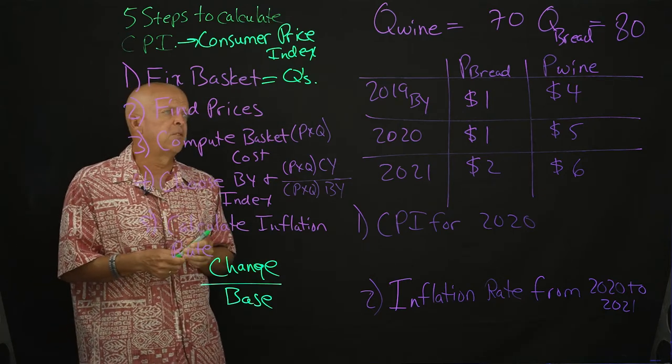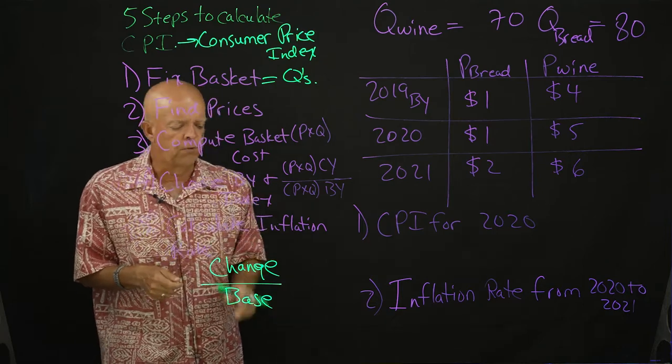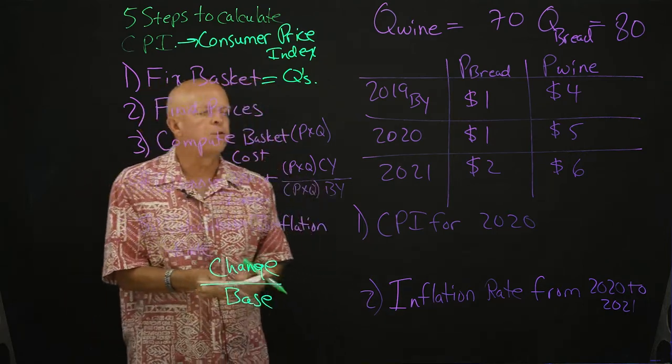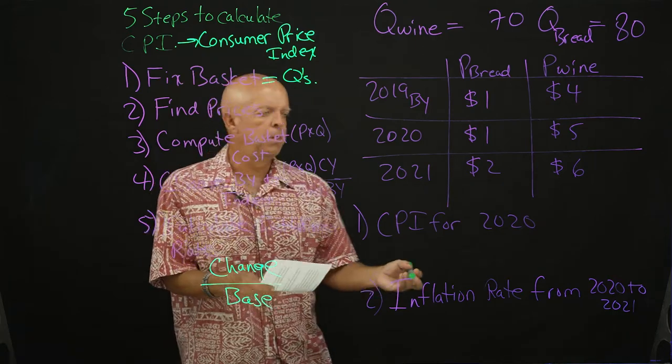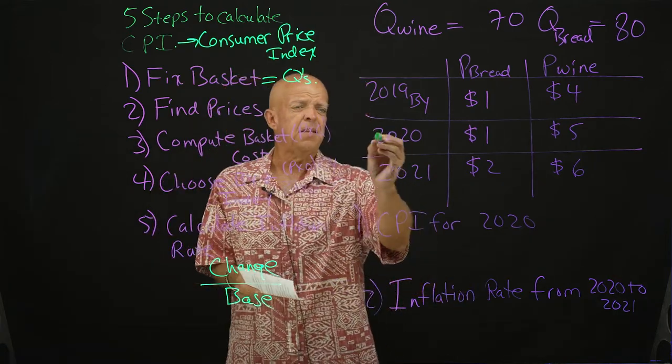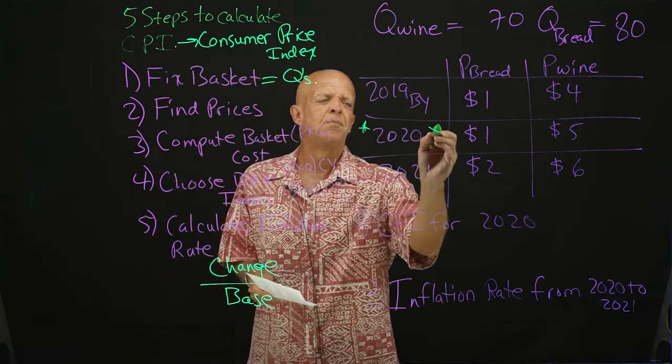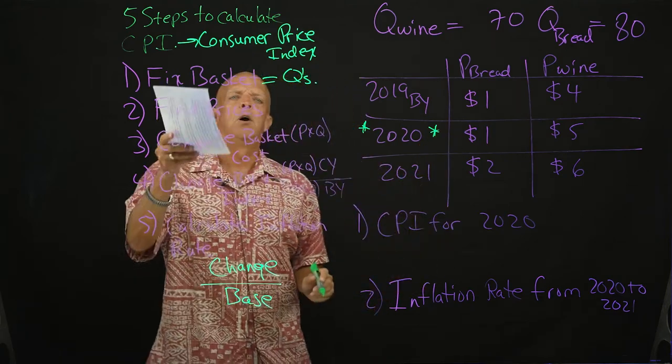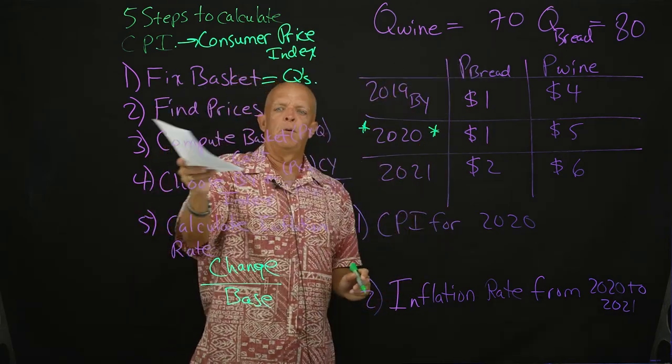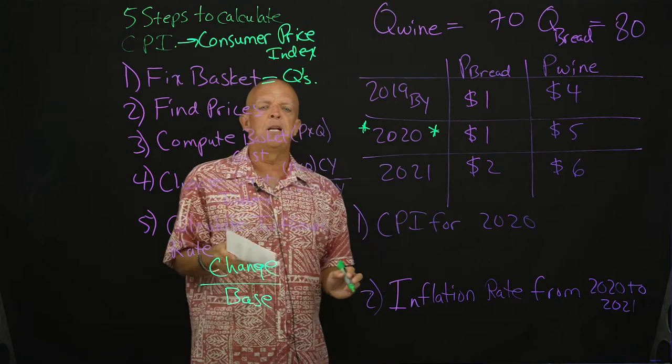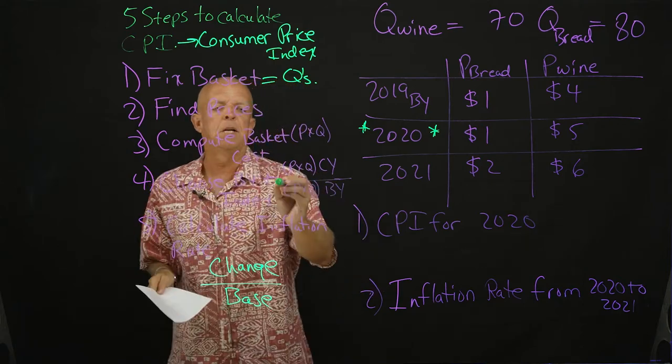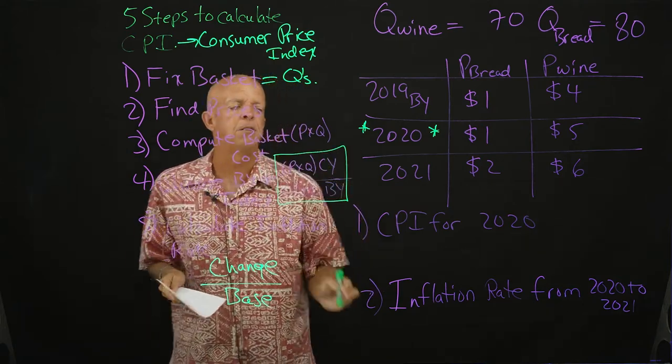Things will get a little small right here when I'm doing my calculations, but I will do my best to make it relatively clear. Now if you watched the last chapter, you saw that I used an example of bread and wine and I use these same prices. But now I'm going to be holding wine constant because we're looking for the change in prices, not necessarily the change in quantities. So our first step: CPI for 2020. That is going to be this year right here.